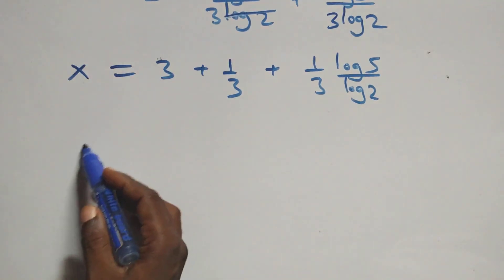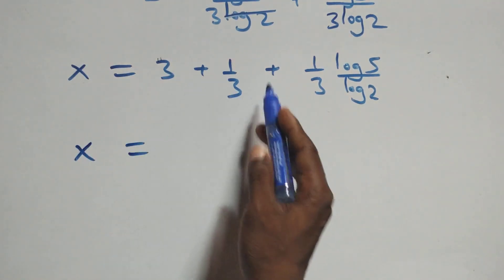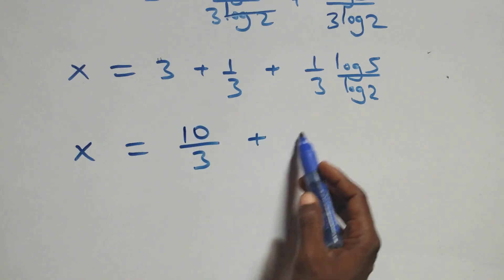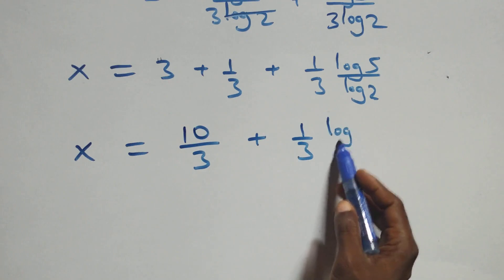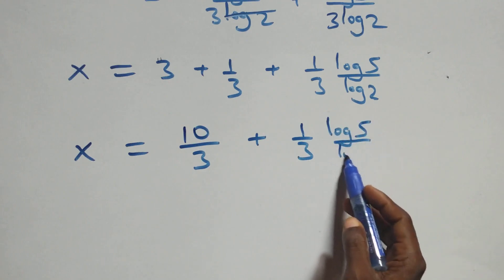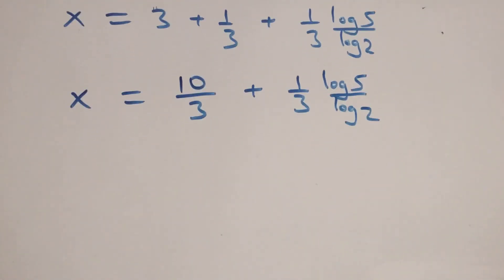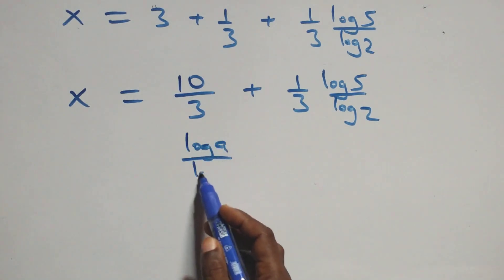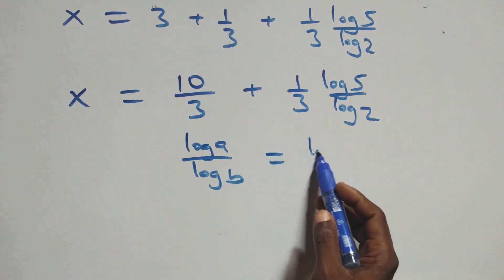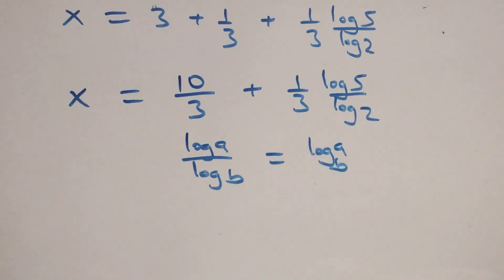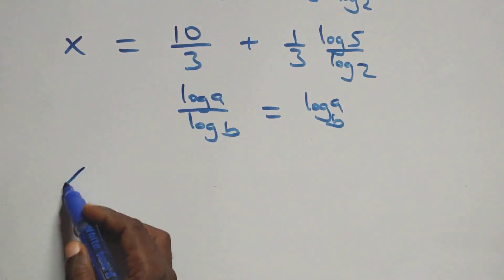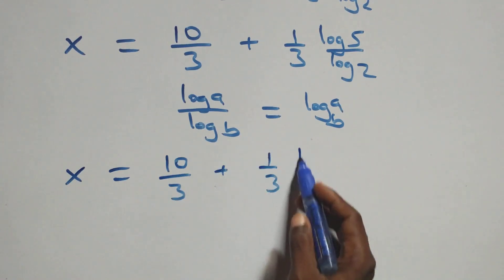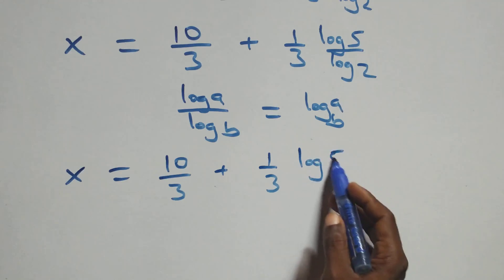This is the same thing as x equals 3 plus 1 over 3, which can be written as 10 over 3, then plus (1 over 3) times (log 5 over log 2). We apply the change of base formula: log a over log b is the same thing as log base b of a. So x equals 10 over 3 plus (1 over 3) times log₂ 5. Bringing this together as one fraction, x equals (10 + log₂ 5) over 3.